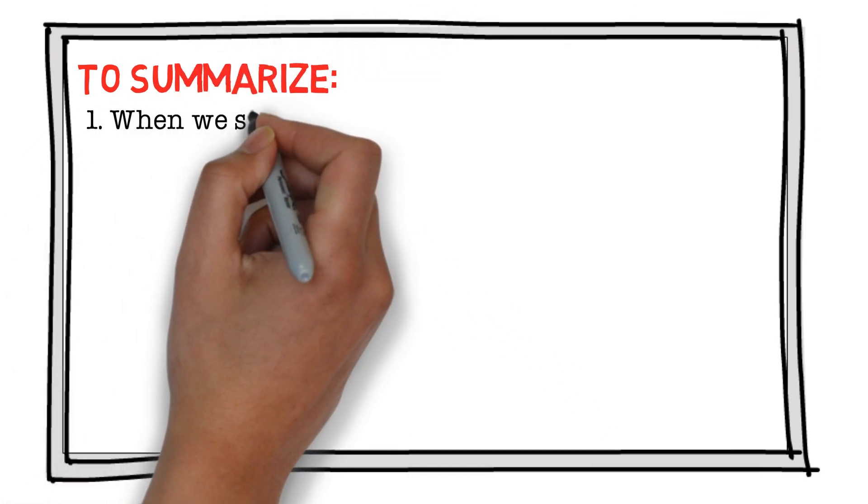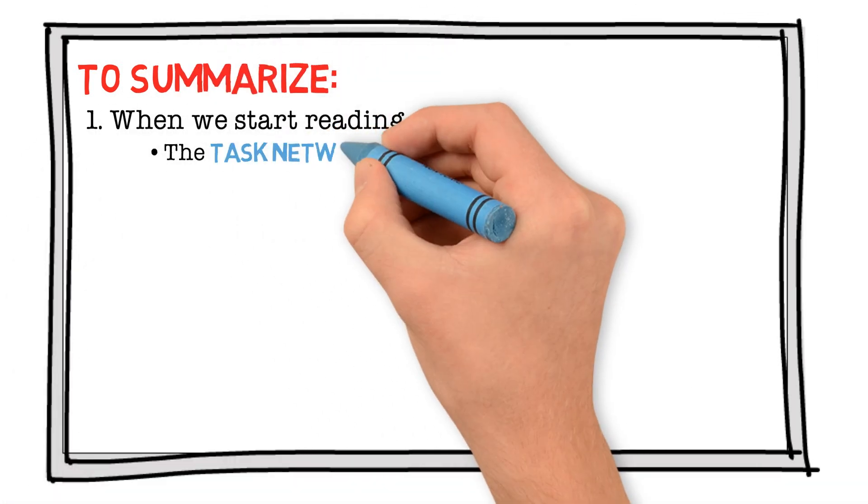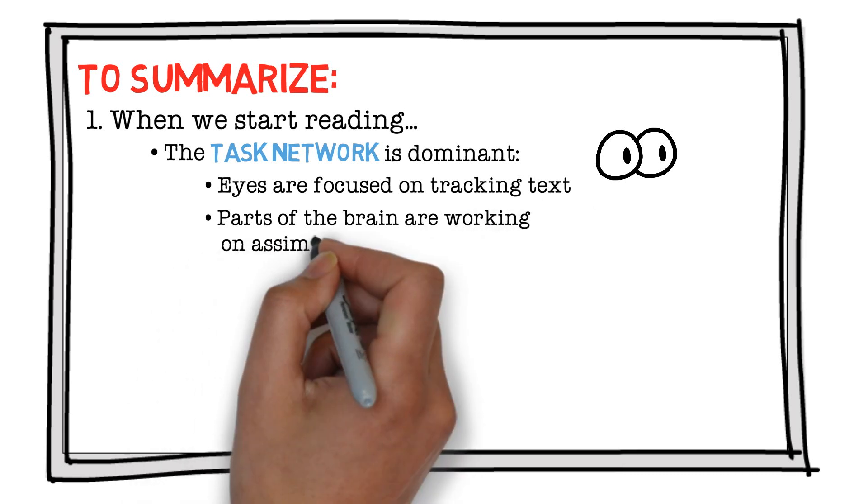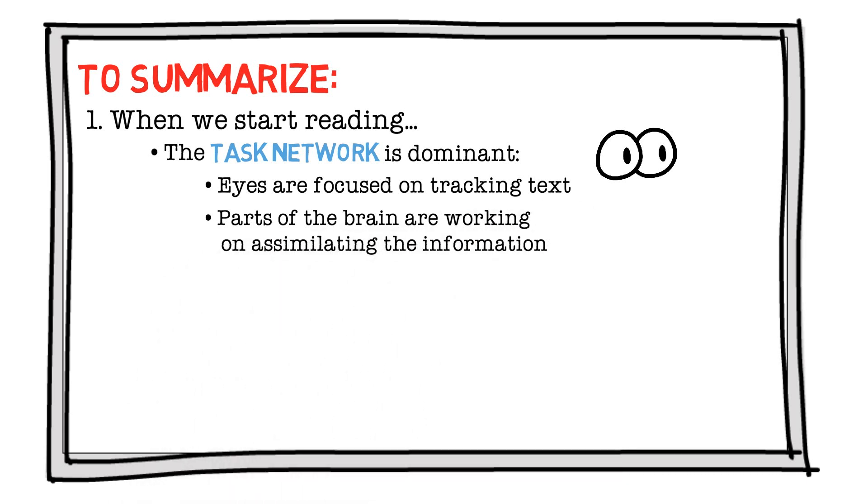Let's summarize everything we've gone over. When we start reading, the task network is dominant, which means the eyes are focused on tracking the text, and parts of the brain are working on assimilating the information.